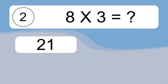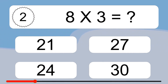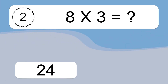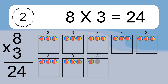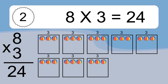8 times 3 equals what? 8 times 3 equals 24. We have 8 boxes, and each box has 3 colorful balls inside. If you count all the balls in all the boxes together, you will have 8 times 3 balls. This equals 24 balls.